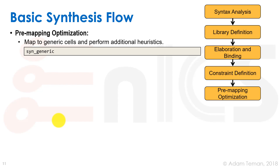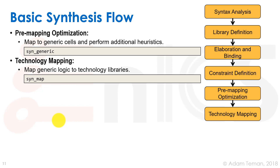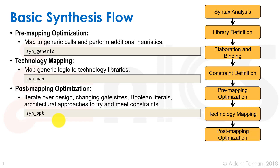Next is pre-mapping optimization: we take our elaborated Boolean logic and map to generic internal cells representing standard cells, running heuristics and optimizations. Then comes the very important stage of technology mapping, where the tool maps the RTL — independent of technology — to actual standard cells with real delays and real limitations of the standard cell library. Post-mapping optimization iterates over the design running further heuristics. In Cadence Genus, the three stages are syn_generic, syn_map, and syn_opt.